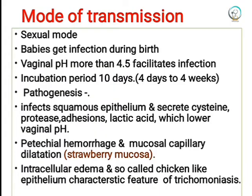The most common mode of transmission is sexual. Babies can acquire infection during birth, which is vertical transmission. A vaginal pH greater than 4.5 facilitates infection and increases the chances of acquiring the organism.